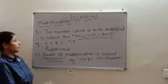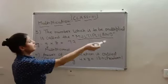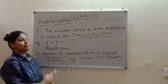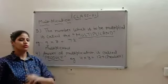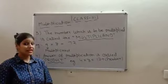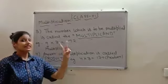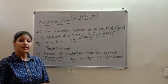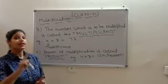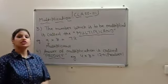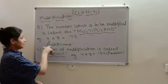My third rule is, the number which is to be multiplied is called the multiplicand. Now, first rule was, multiplication is a repeated addition. Second, the number by which you multiply is multiplier. Now, the number which is to be multiplied is multiplicand.